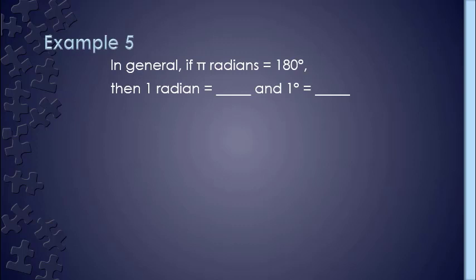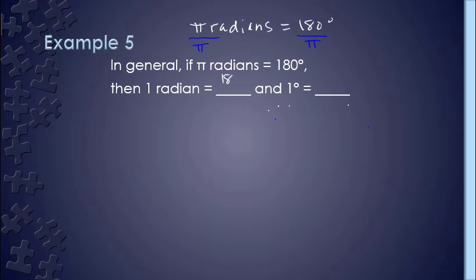Because I've already got radians and degrees in my statement on the first line, let me write this up above: pi radians is equal to 180 degrees. If I'm curious about one radian, what I'm really trying to figure out is how do I turn that pi radians into one? The answer is that if I divide it by itself — in other words, if I divide by pi — pi divided by pi is one. But if I divide by pi on the left, I have to divide by pi on the right. So I end up saying that one radian is equal to 180 degrees over pi.